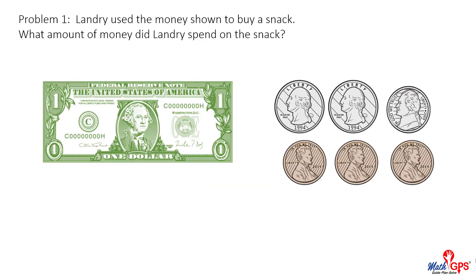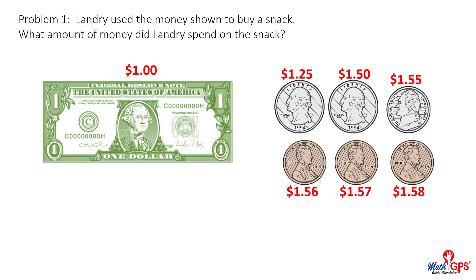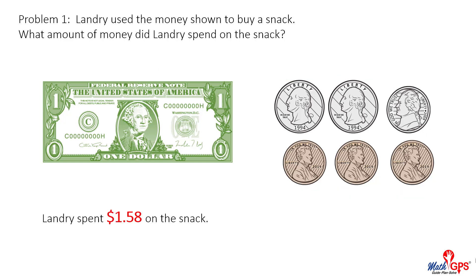Problem one. Landry used the money shown to buy a snack. What amount of money did Landry spend on the snack? Count with me: one dollar, one dollar 25, one dollar 50, one dollar 55, one dollar 56, one dollar 57, one dollar 58. Landry spent one dollar and 58 cents on the snack.